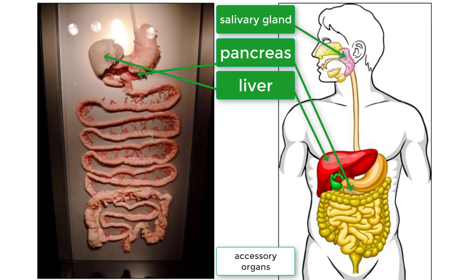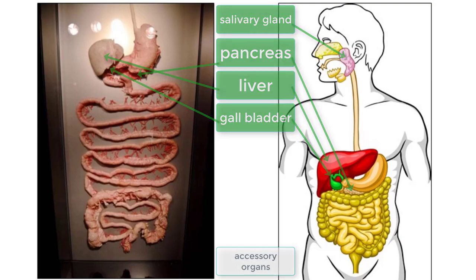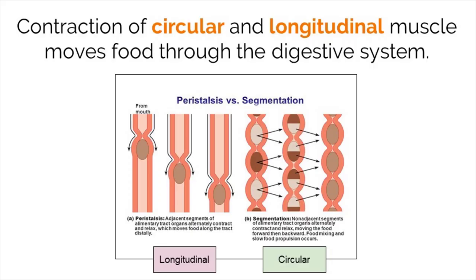Next is the liver. The liver plays many different roles, but for now let's just focus on one, which is that the liver creates bile, a chemical that helps break down fats. The liver places the bile into the gallbladder, which is another accessory organ, where it is then released into the small intestine when needed.